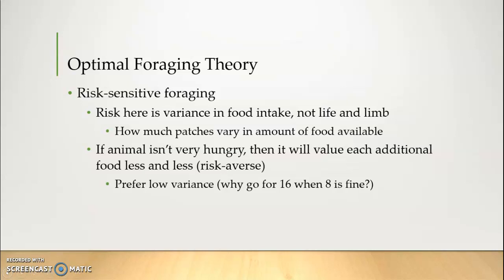An animal that's not very hungry is not going to risk moving on because they're happy with eight. On the other hand, there might be an area where the variance is much higher — where patches vary a lot more in how much food they have. They might average out to eight, but one patch might have one and another might have sixteen. Well-fed animals will prefer to forage in low variance patches where they may not get any jackpots, but they're also not going to strike out. They don't really need sixteen — eight is fine.